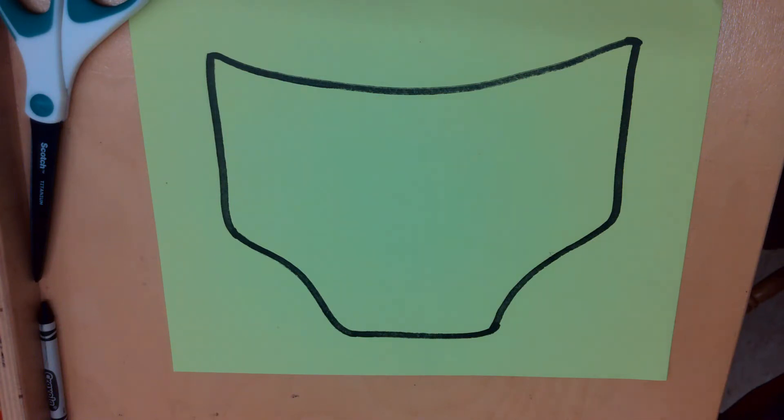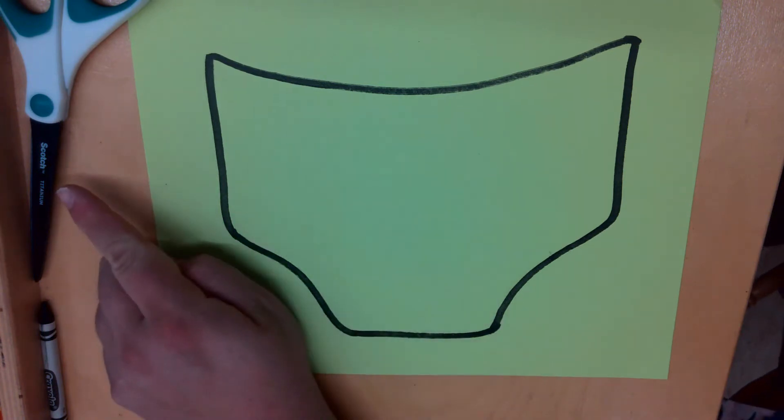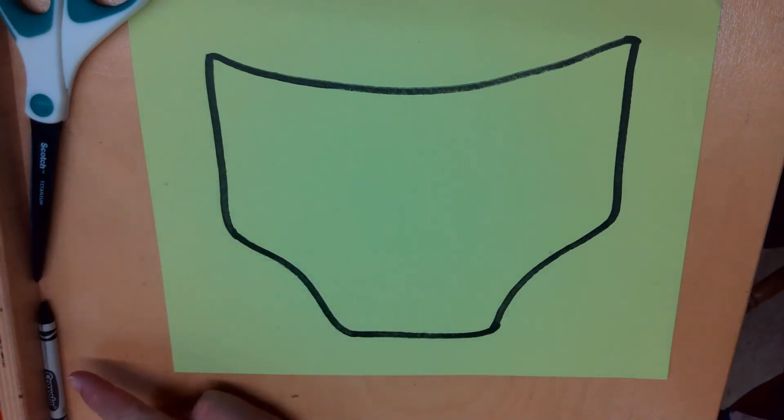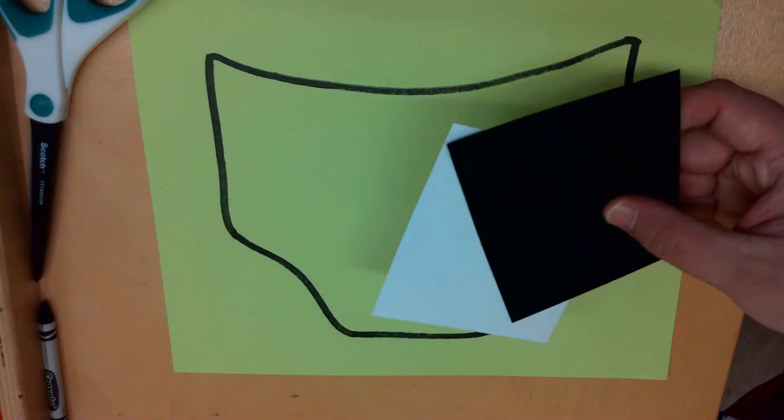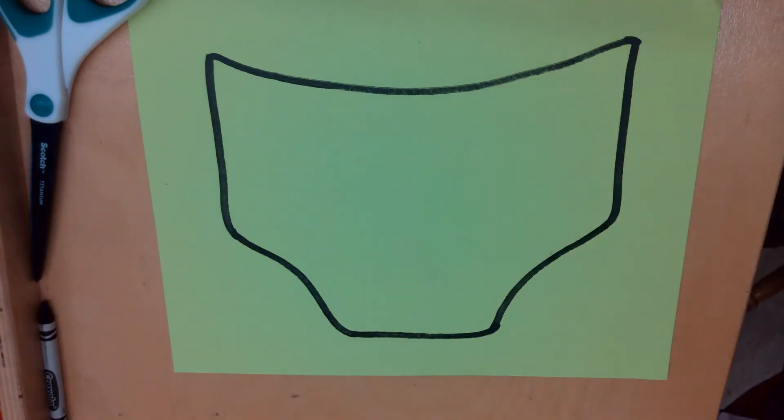You are going to need a pair of underwear, some scissors, a black crayon, a black and white piece of paper, and some glue. Let's begin.